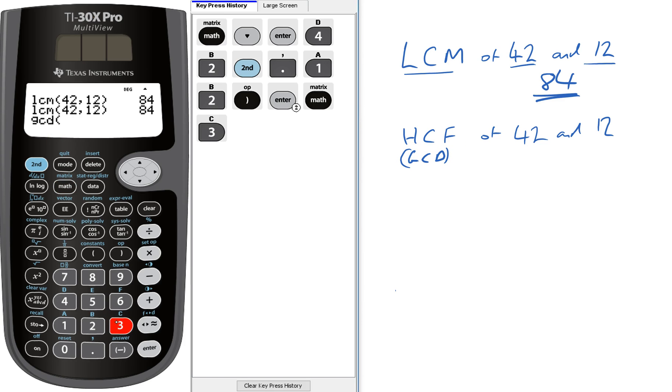So press 3, and then we've got 42. Again, second, the comma, and 12, and that gives us 6. So we've got 6 is our answer for that.